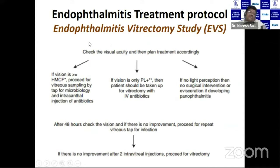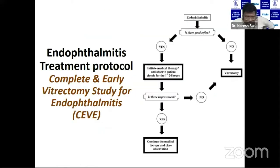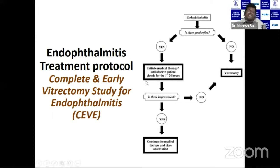Per the EVS protocol: if vision is hand movements or better, go for aqueous sampling with intravitreal antibiotics. If vision is less than perception of light, go for vitrectomy surgery. Currently, the approach has shifted toward complete and early vitrectomy, including induction of posterior vitreous detachment. In some gram-negative cases, people also inject silicone oil.